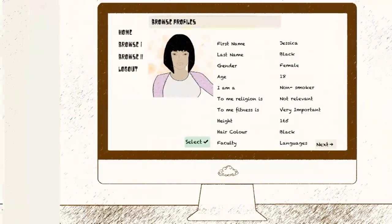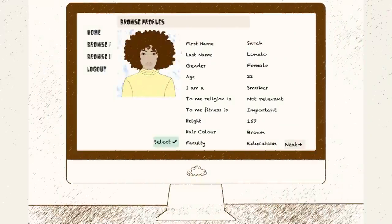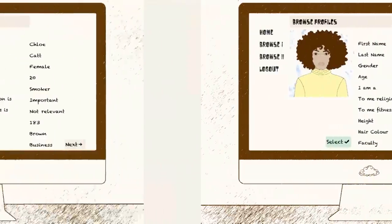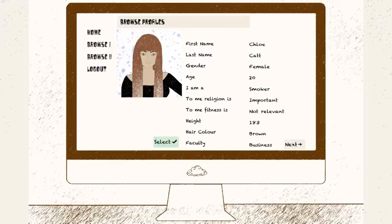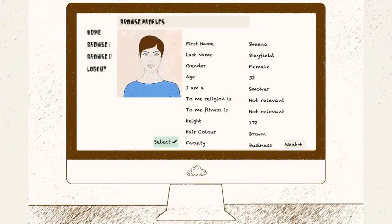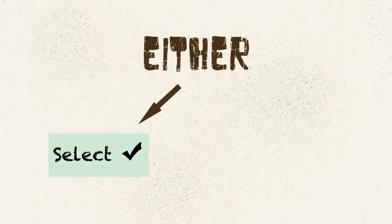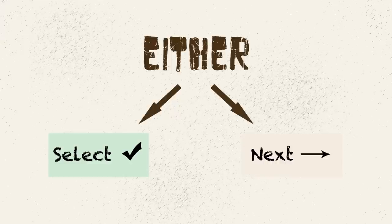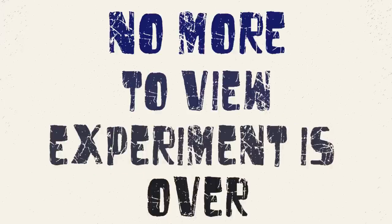In this stage, you'll not be able to move through the profiles freely. You will only be shown a profile once. You can either choose that person and the experiment is then over, or you can move to the next person with the hope that you prefer them more. You cannot go back, and you will not know how many there are until you reach the end.